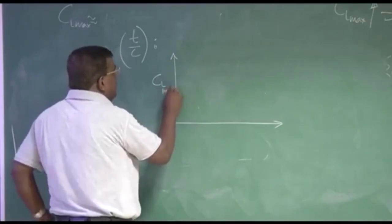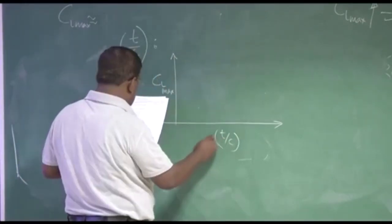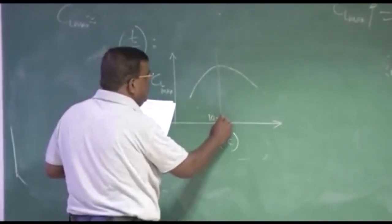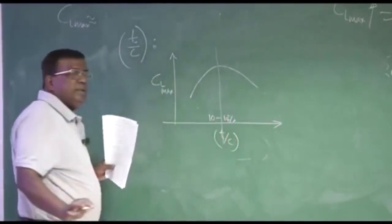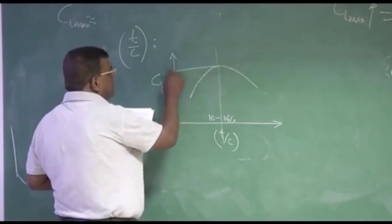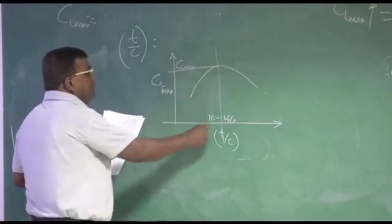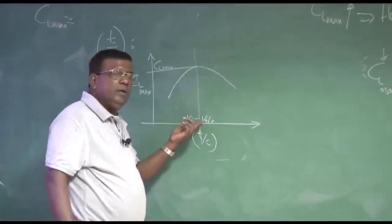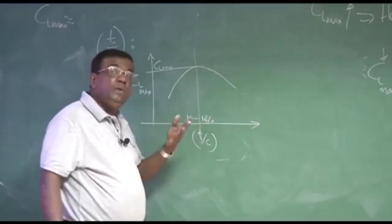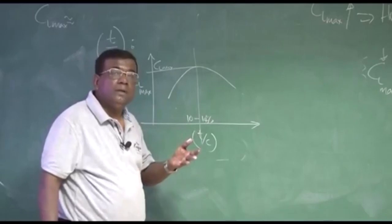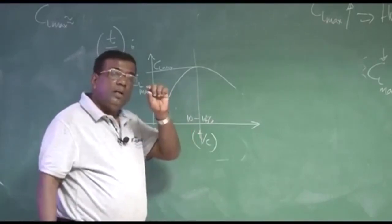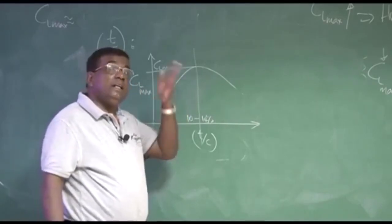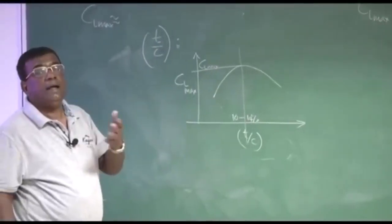And you should know from the discussion what came out was, if I plot CL max by T by C, the trend will be something like this. A particular T by C, generally it is between 10 to 14 percent, these are the design number, typical numbers. You get maximum CL max as far as effect of T by C is concerned. So most of design low subsonic, you will find they will be operating around this. The moment you have a high speed, this Mach number effect also comes, because you need to have a smaller T by C so that you reduce the drag. In turn you increase CL by CD.